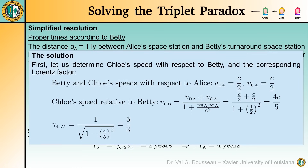The solution requires clearly defining what we are calculating. For Betty to predict Chloe's proper time, she needs to know how fast Chloe is traveling with respect to her. She knows that both their speeds with respect to Alice are c/2. This means that Chloe's speed with respect to Betty is obtained by applying the relativistic velocity addition formula. Plugging in the numbers gives a speed of 4c/5. Betty can also calculate the corresponding Lorentz factor to be 5/3.